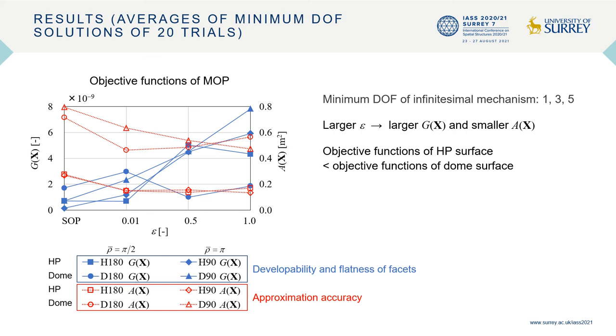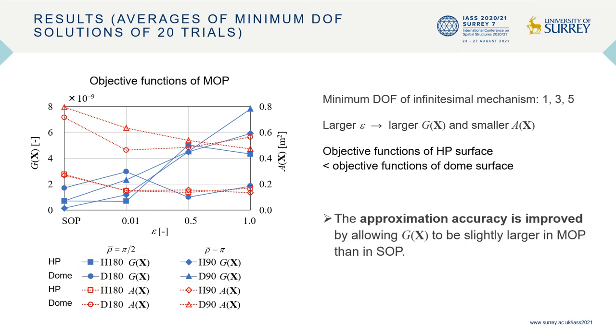This is the average values of objective functions of minimum degrees of freedom solutions obtained by 20 trials. From this graph, it can be said that the approximation accuracy can be improved by allowing G(X) to be slightly larger.